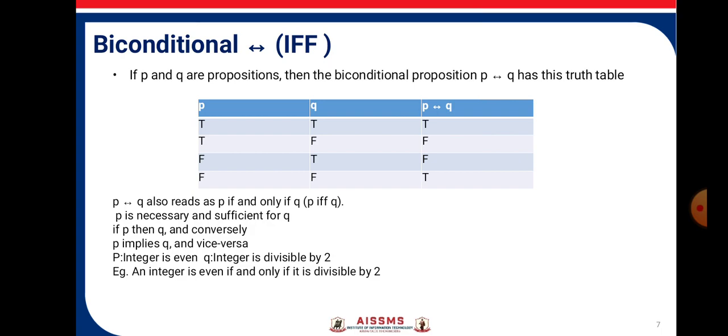Biconditional (IFF): If p and q are propositions, then the biconditional proposition p ↔ q has the truth table: p has T, T, F, F, and q has T, F, T, F. Then p ↔ q will give T, F, F, T. When both the truth values are same, that time we get T, otherwise we get F.